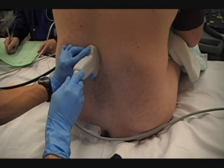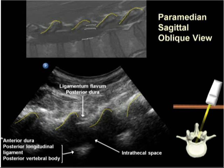On ultrasound, the sloping lamina have a sawtooth-like appearance. In between the saw teeth of the lamina, the limits of the vertebral canal are visible through the paramedian interlaminar spaces as two horizontal hyperechoic linear structures. The deeper structure is the anterior complex and represents the posterior aspect of the vertebral body, the posterior longitudinal ligament and anterior dura. Above that lies the hypoechoic intrathecal space containing cerebrospinal fluid, and superficial to that the posterior complex comprising the posterior dura, epidural space and ligamentum flavum.